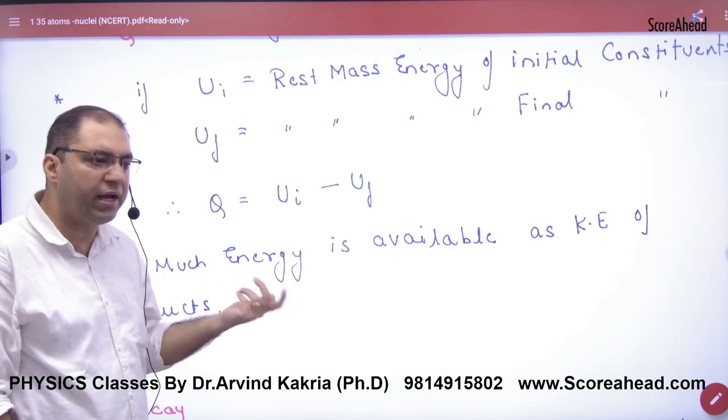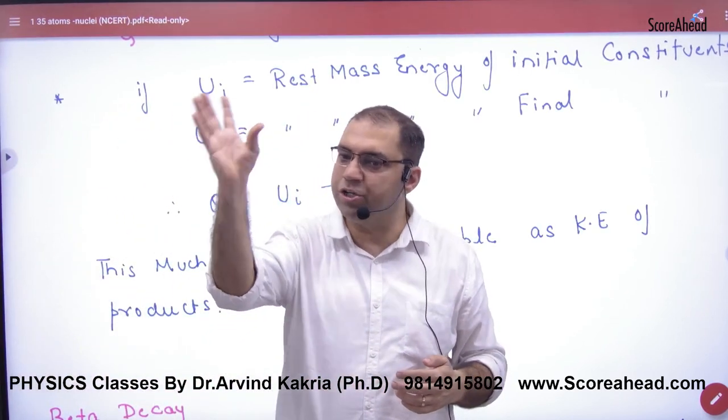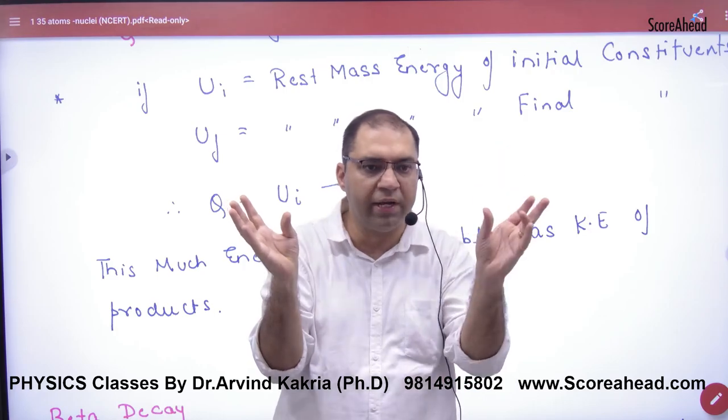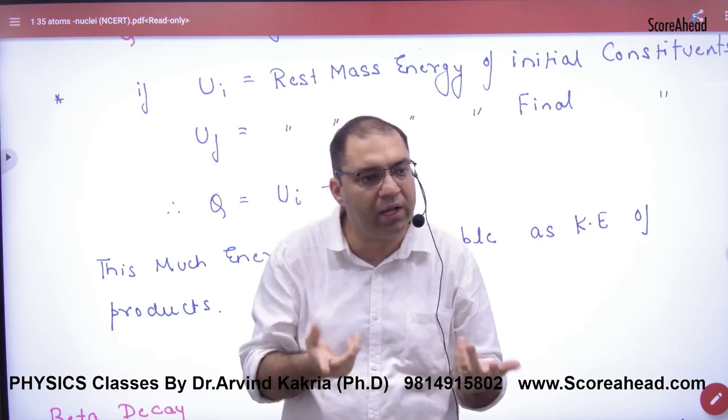Now what is the line? Just suppose reactants energy is 100 joules, product energy is 80 joules. You are thinking that's 80 joules, where is the remaining 20?